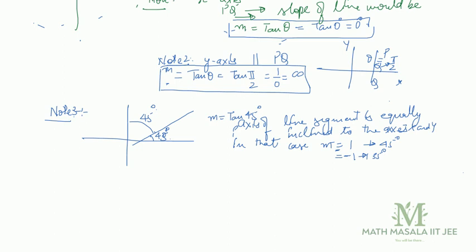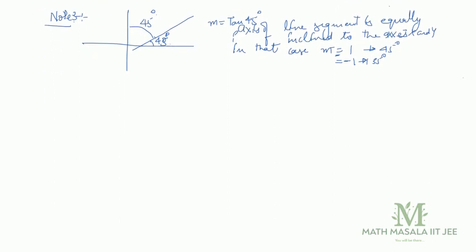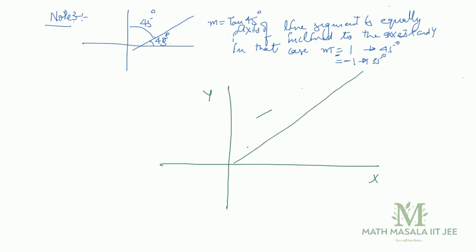Now let's work to derive generalized coordinates. Consider a coordinate system with a y-axis and an x-axis, and take one generalized line PQ. Suppose point P has coordinates x1 comma y1, and point Q has coordinates x2 comma y2. Using these coordinates, we can find the slope formula. The slope m equals y2 minus y1 divided by x2 minus x1, which gives the slope of a straight line.